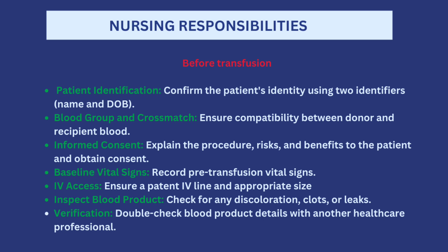Now let's talk about what you need to take note of as the nurse when doing a blood transfusion. Before starting, confirm the patient's identity using their name and date of birth, and verify it against the transfusion order. Ensure blood grouping and cross-matching has been done, and double-check the transfusion order against the blood bag. Explain the procedure and obtain informed consent, discussing risks and benefits. Record pre-transfusion vital signs — temperature, pulse, heart rate, oxygen saturation, and blood pressure. Ensure the patient has IV access with an appropriate cannula size that is not inflamed.